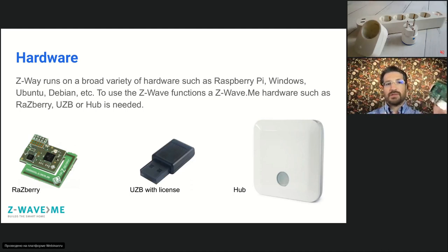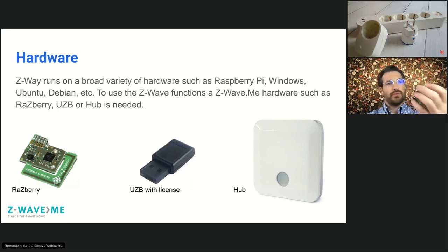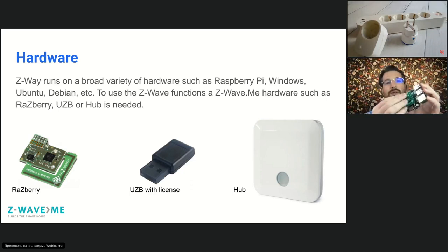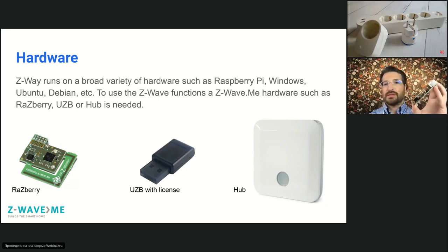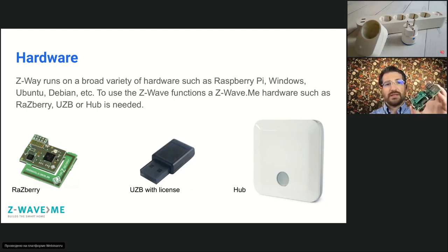This is an example of a Raspberry Pi Model 3B Plus — you just plug the shield in like this, so installation is done. The next step is to install the software, which is also pretty easy, and we will discuss it a little bit later.